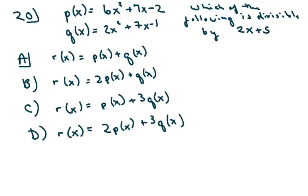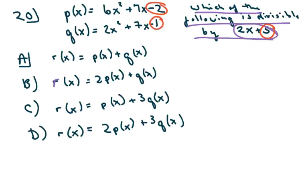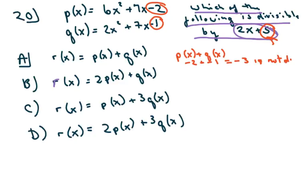The last one is considered the hardest. It asks which of the following is divisible by 2x + 5. We look at each equation, starting with the constants and the 5 to see what we can eliminate. For option a, I add p + q: negative 2 plus negative 1 gives negative 3. Negative 3 is not divisible by 5, so option a is out.